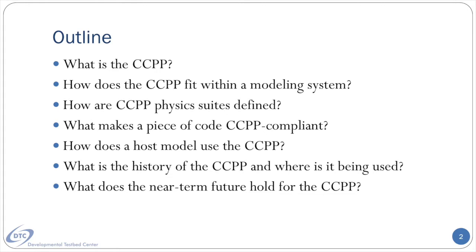Next, I'll discuss how parameterizations are assembled into physics suites to run within the UFS. Following that, I'll provide some details about what is special about a parameterization to be used within the CCPP, and how the UFS, or any model, needs to provide information about the data it provides to the physics. Finally, for context, I'll step back and provide a brief history of this project, where it currently is being used, and where it is going in the short term, and by extension, how these plans might affect the UFS.